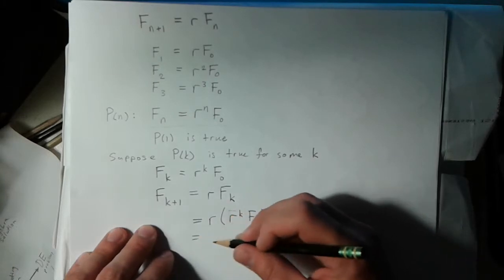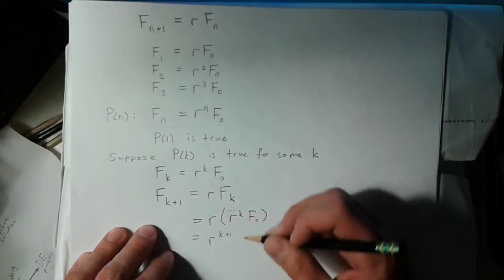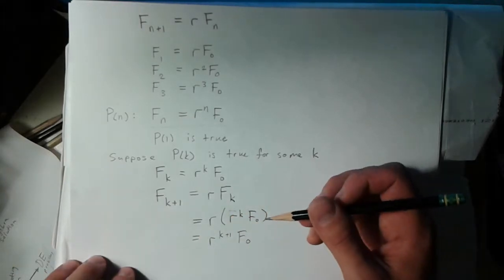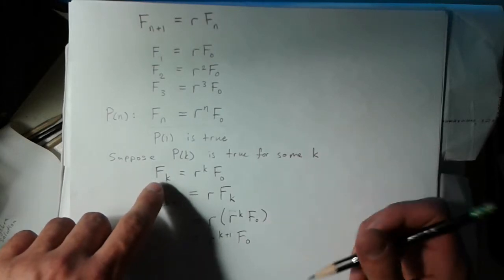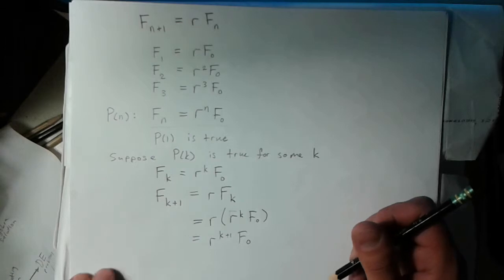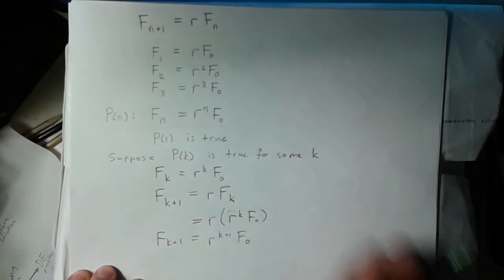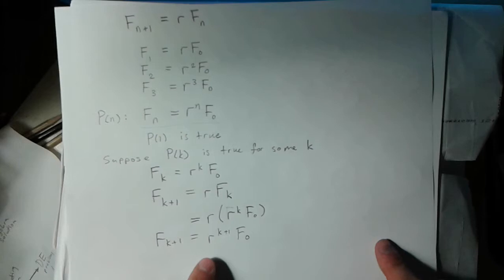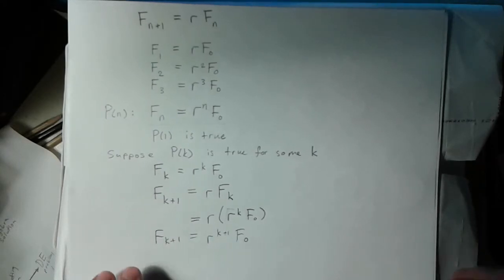You can see simplifying that this is just r to the k+1 times F_0. So we showed that supposing F_k equals r to the k times F_0 implies that F_(k+1) equals r to the k+1 times F_0.